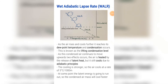As this condensed air continues to move upwards, two effects occur. The air is heated by the release of latent heat, but it still cools due to the adiabatic principles. The cooling is stronger, so the air cools at a rate of five degrees for every thousand meters. This is an average — depending on different factors it can cool between four and nine degrees per thousand meters — but we average it to five degrees per thousand meters.